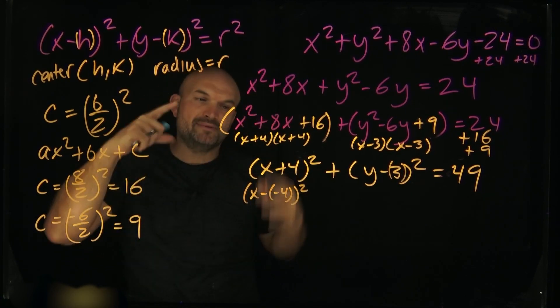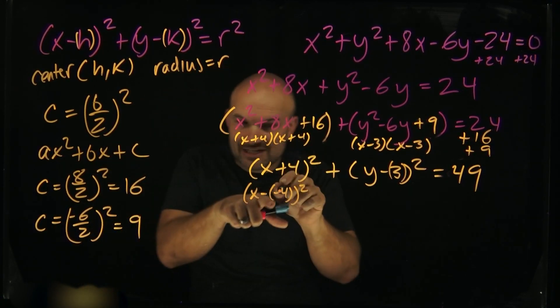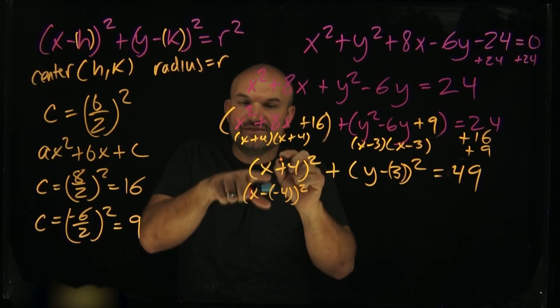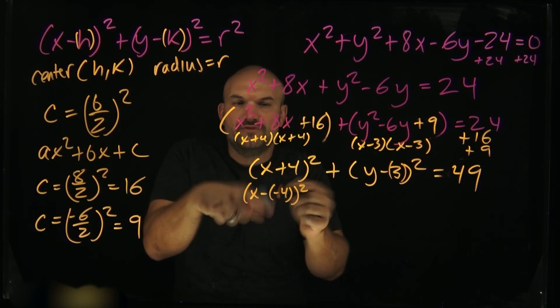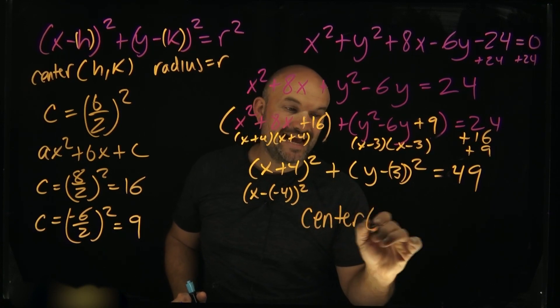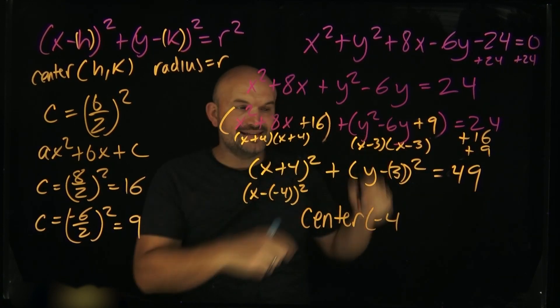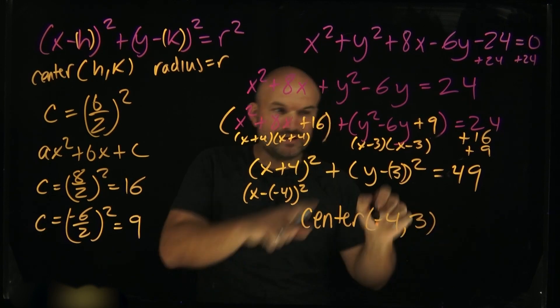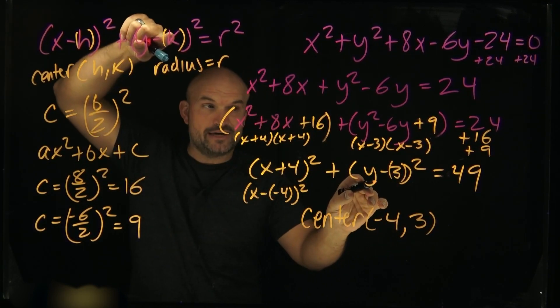That's what's so important here about this problem - understanding what your h and k is. Your h, in this case, is actually a negative 4, because the x minus a negative 4 is still x plus 4. So my center, in this case, is going to be a negative 4. My k, in this case, is going to be a positive 3, because you can see how I have it written in this standard form.